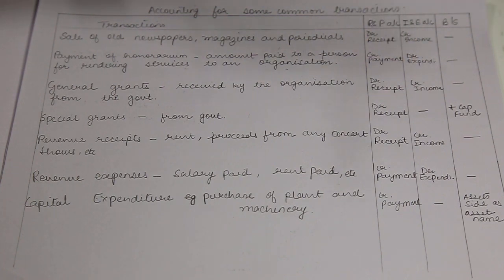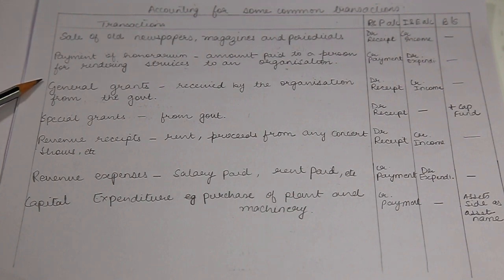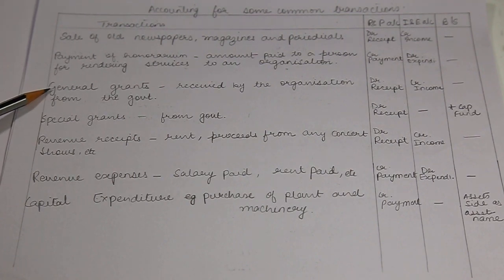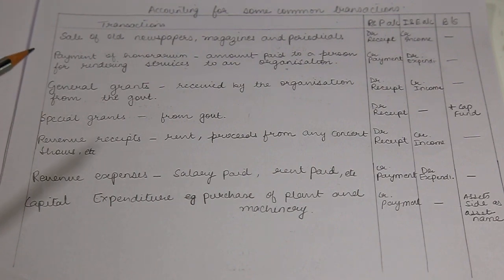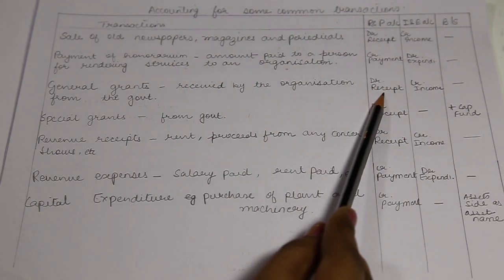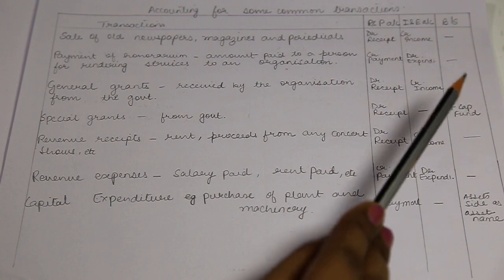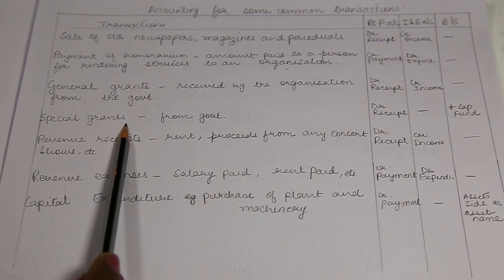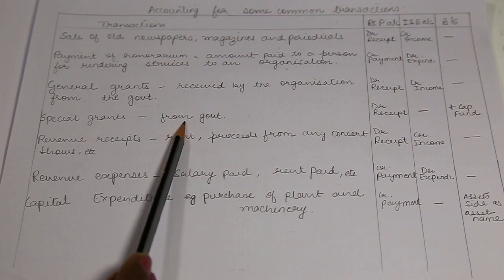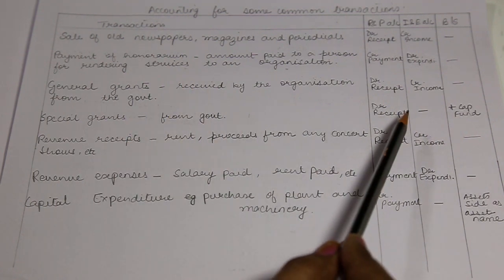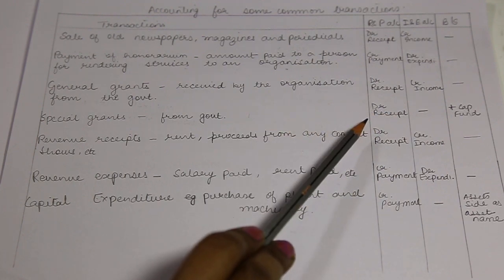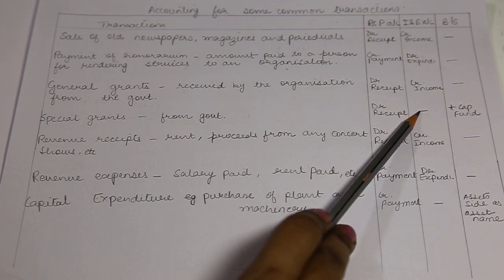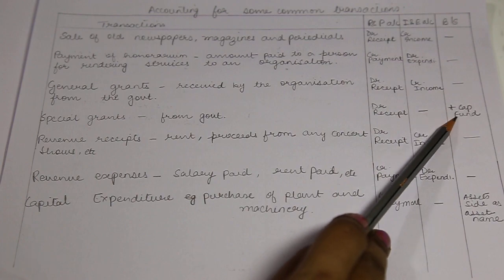Now grants — grants are what we receive from the government. Grants, like donations or legacies, can be general or specific. General grants are given to the organization for general purposes, so this will be considered as revenue receipt. It will come in receipts and payments account on the debit side in full, and as revenue receipt it will also be credited in the income and expenditure account as income. Specific grants are received from the government for a specific purpose. As this is a receipt, it will be debited in the receipts and payments account. As it is not a revenue receipt, it will not appear in income and expenditure account, but will be capitalized in the capital fund on the liability side of the balance sheet.